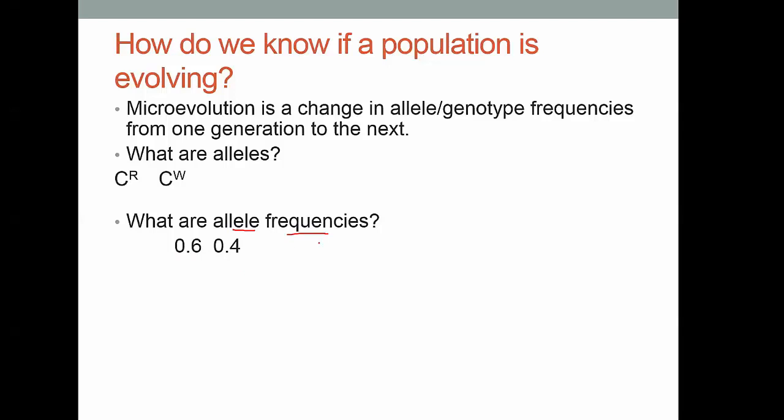We can also look at genotype frequencies. It's going to be important for you to remember the difference between genotype and allele in this lab. Genotype frequencies would allow you to look at how many cows have the red-red, red-white, or white-white combinations of these alleles. So genotype is when you look at the diploid combination.